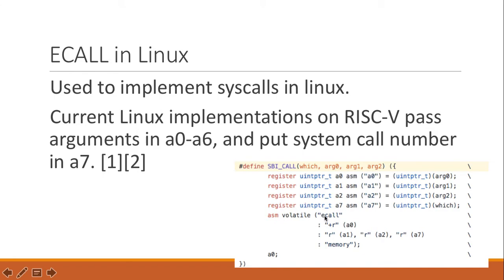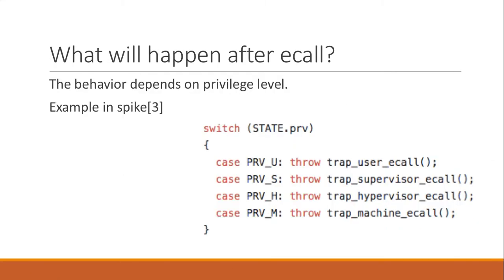So after you execute ECALL, A7 will be the argument. That's a bit about how to pass the argument. Next, we're going to talk about what will happen after ECALL, and the behavior actually depends on the privilege level. So you have to go to the privilege level spec to find out what will happen.